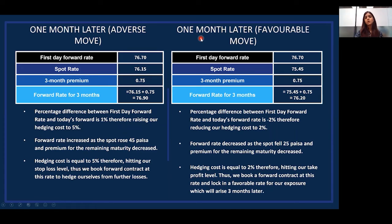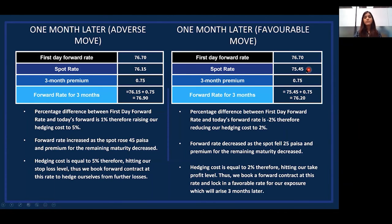Now let's look at another case where one month later the currency moves in a favorable direction. Our first day forward rate is 76.70 and the spot rate comes down to 75.45. The three-month premium is 0.75, giving a forward rate of 76.20. The percentage difference between the first day forward rate and today's forward rate is negative 2%, reducing our hedging cost to 2%. The forward rate decreased as the spot fell by 25 paise and the premium for the remaining maturity also decreased. Our hedging cost hits the take profit level of 2%, so we book a forward contract at this rate and lock in a favorable rate for our exposure.